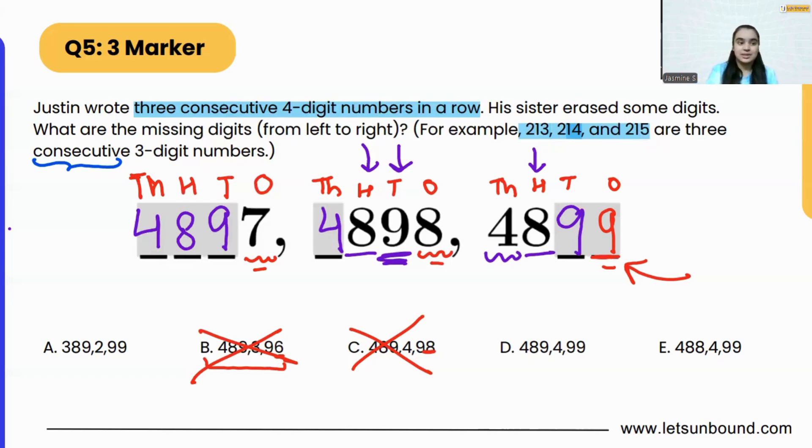And now you can check as well. The first number is 4897. Next is 4898. And then 4899. They are in a row. They are consecutive. Easy, isn't it?